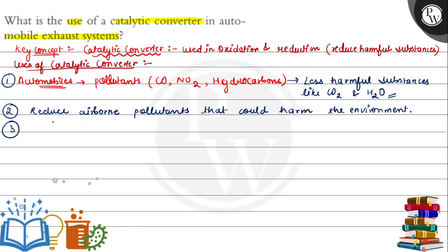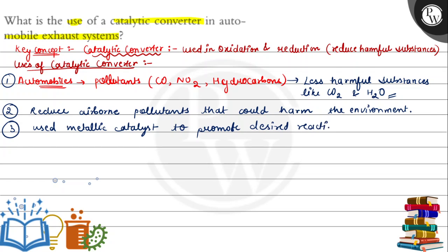The next use of the catalytic converter is that it also uses metallic catalysts to promote the desired reaction at low temperature. For example, metals like platinum, palladium, and rhodium are used as catalysts.